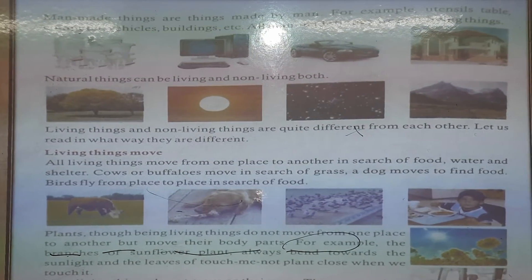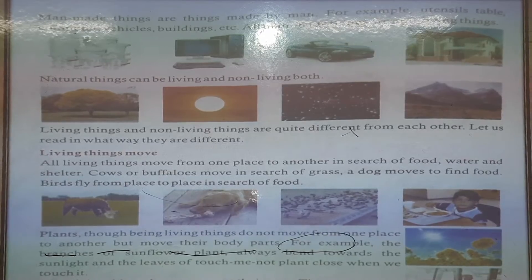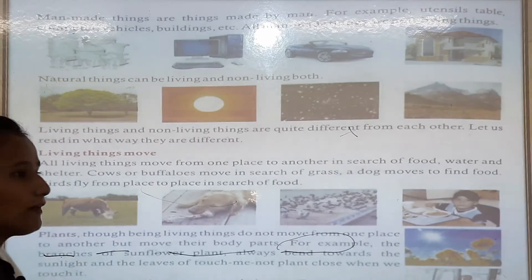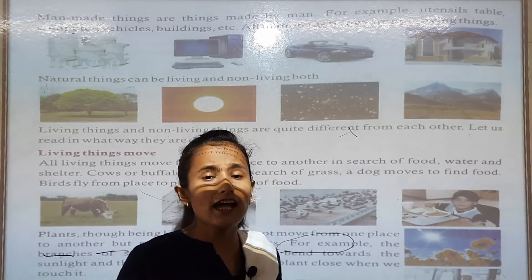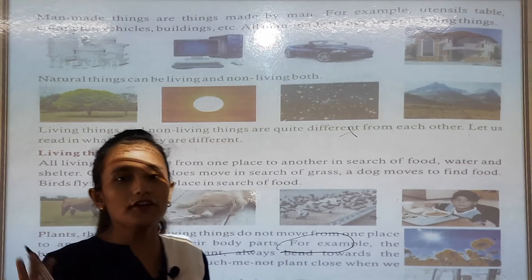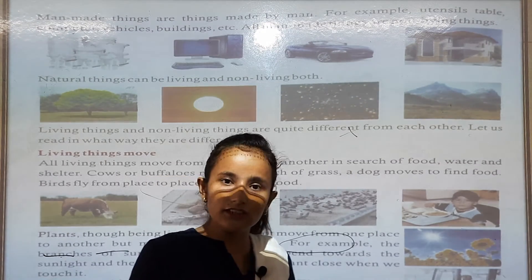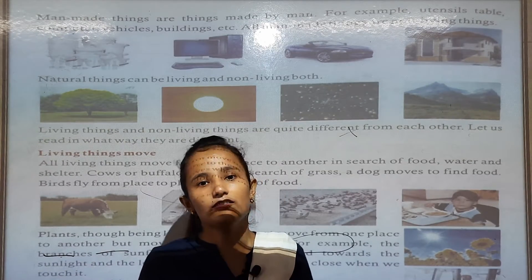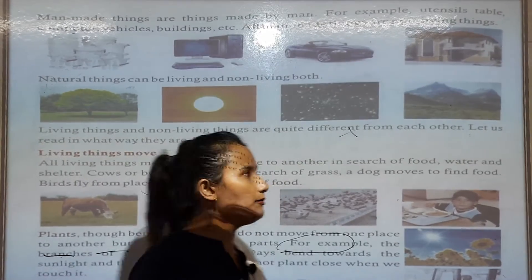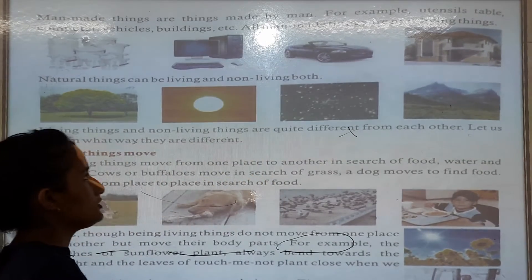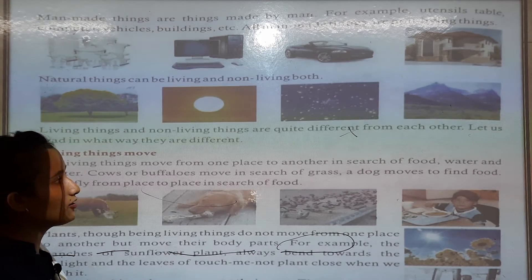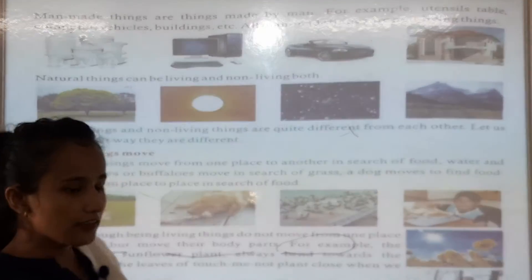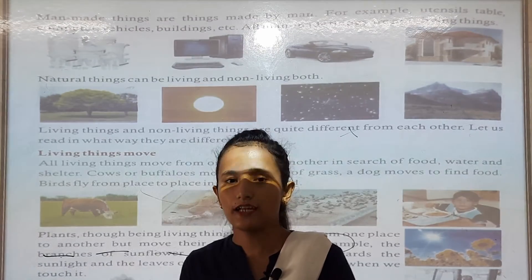Natural things can be living and non-living both. But man-made things are not living things — man-made things are non-living things. Natural things are living and non-living both. Natural things like plants are also natural things. Living things and non-living things are quite different from each other.